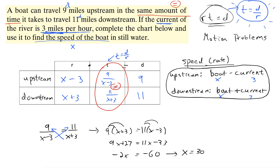So x equals 30 — but 30 what? We solved for x, which is the speed of the boat in still water. Since we're working in miles per hour, the answer is 30 miles per hour. That is the speed of the boat in still water.